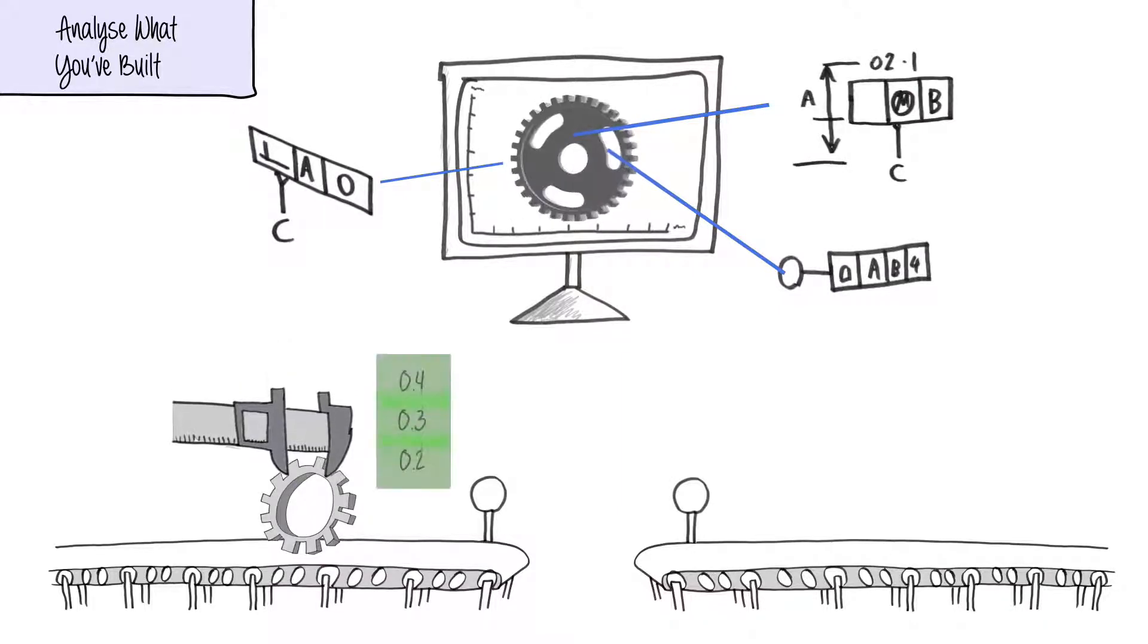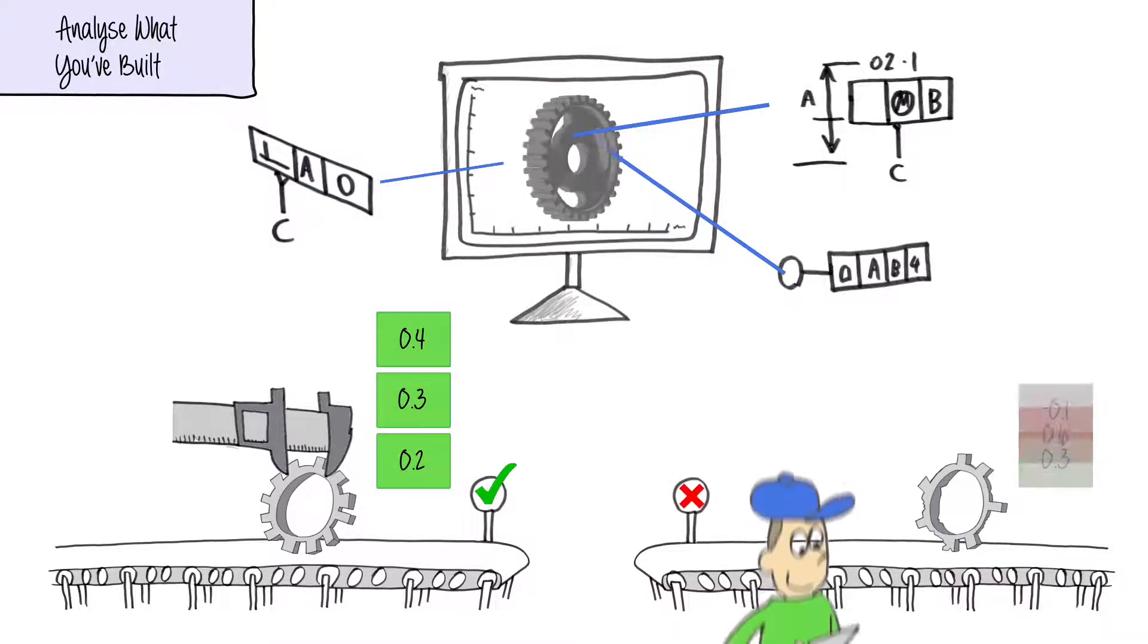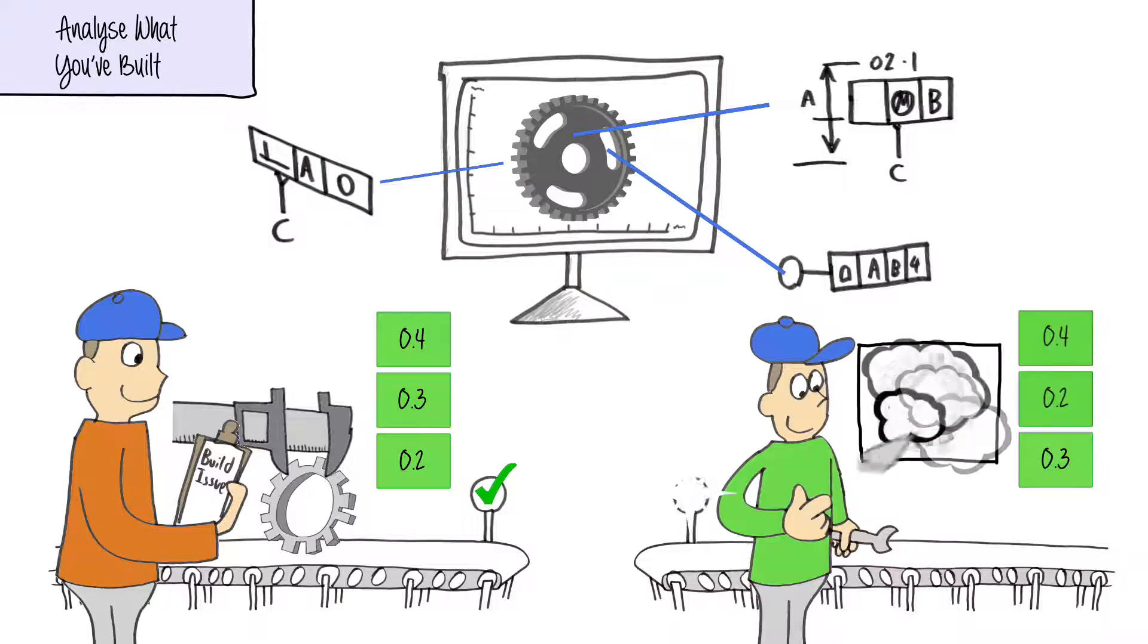If it matches the design specifications, then your part is good. But if something went wrong, the system shows us dynamically right away, so we can stop bad parts being produced.